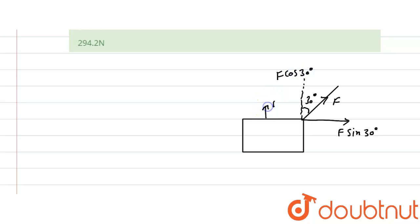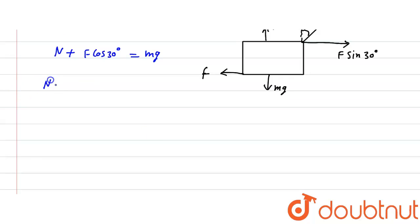Now here normal force is in upward direction and this weight is downward direction. And now here this is a friction force. Now here we write the equation in vertical direction, that means N plus F cos 30 degrees equals mg. So here we find the N value is equal to mg minus F cos 30 degrees. Let it be equation 1.